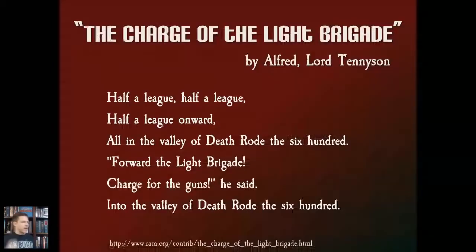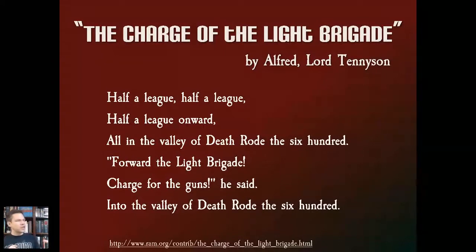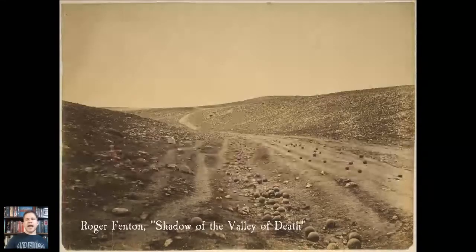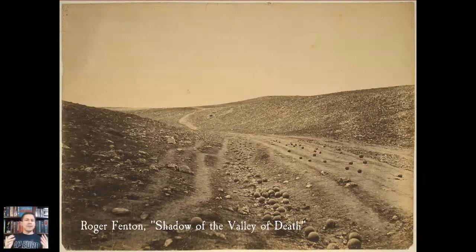Alfred Lord Tennyson's 'The Charge of the Light Brigade' — I was surprised that a lot of students had never heard this poem. 'Half a league, half a league, half a league onward, all in the valley of death, rode the six hundred.' This is of course describing the Crimean War — the second industrial revolution is just kicking in, and you're seeing this clash of old and new military technologies. This is really close to the American Civil War — about halfway between the Napoleonic Wars and World War One.